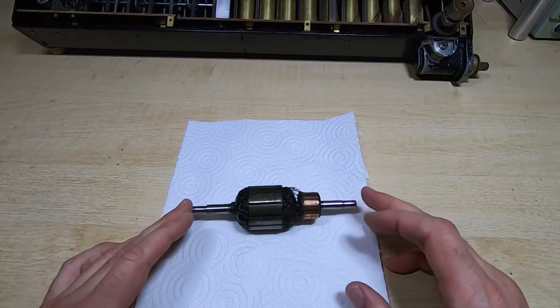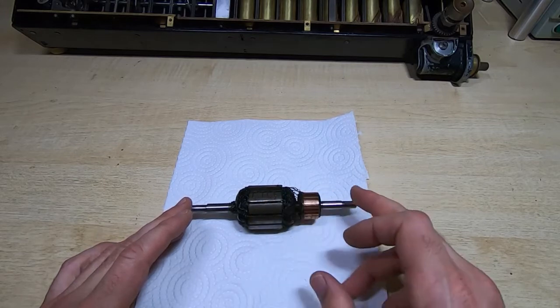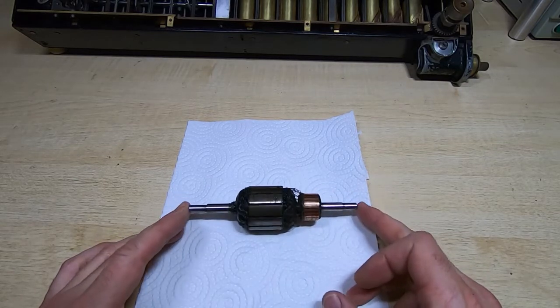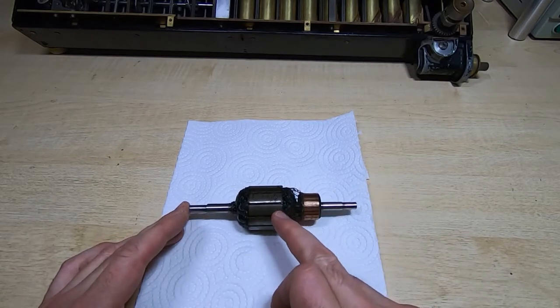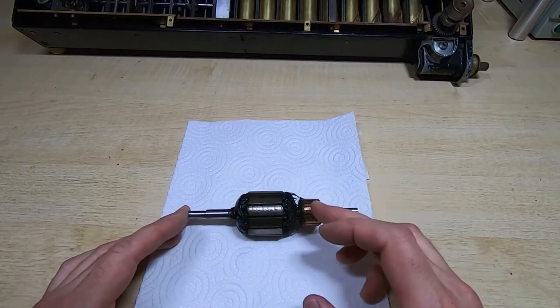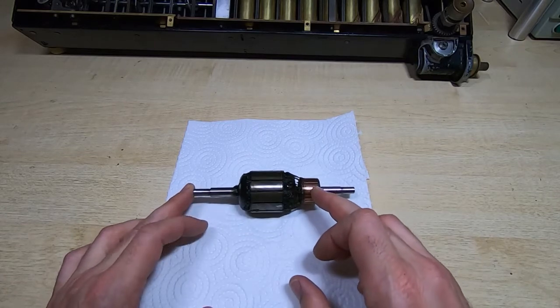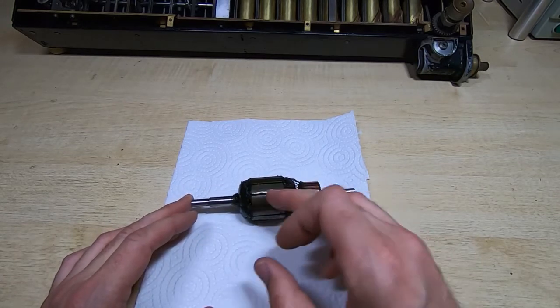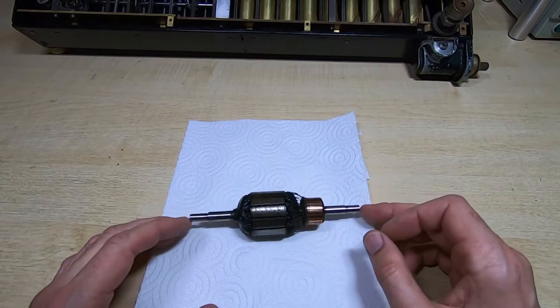Unfortunately I don't have the specification, timing, or anything else for this motor, so I'm going to have to rewind it. I need to see which winding goes to which commutator segment in order to do that, and count the number of turns.